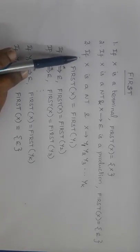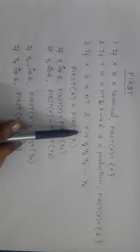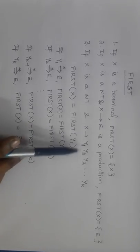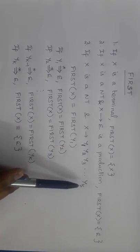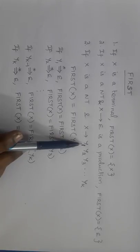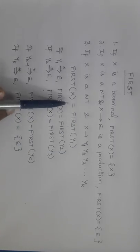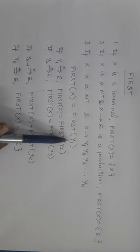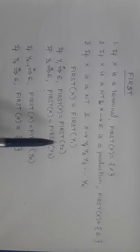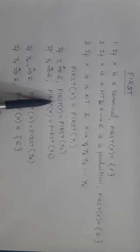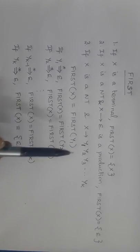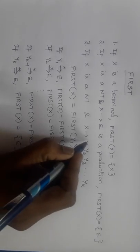Rule 3: if X is a non-terminal symbol and X derives Y1 Y2 Y3 up to Yk — that is, X has k symbols on the right-hand side of the production — then we need to add FIRST of Y1 to FIRST of X. FIRST of X equals FIRST of Y1. If Y1 derives epsilon, then we need to add FIRST of Y2 also to FIRST of X.